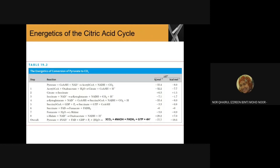Now let's look at the energetics of the TCA cycle. From step one to step eight, most reactions are exergonic, meaning the cell produces energy. The overall reaction from step one to step eight is: pyruvate + 4 NAD+ + FAD + 1 GDP + inorganic phosphate + 2 H₂O → 3 CO₂ + 4 NADH + 1 FADH₂ + 1 GTP + 4 H+. The total exergonic energy is -77.7 kilojoules per mole.